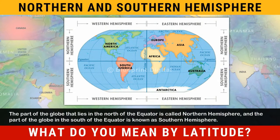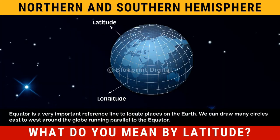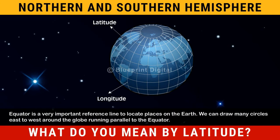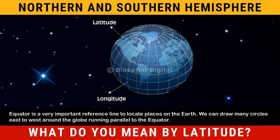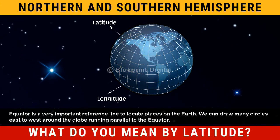The part of the globe that lies in the north of the equator is called the northern hemisphere, and the part of the globe in the south of the equator is known as the southern hemisphere. The equator is a very important reference line to locate places on the Earth.